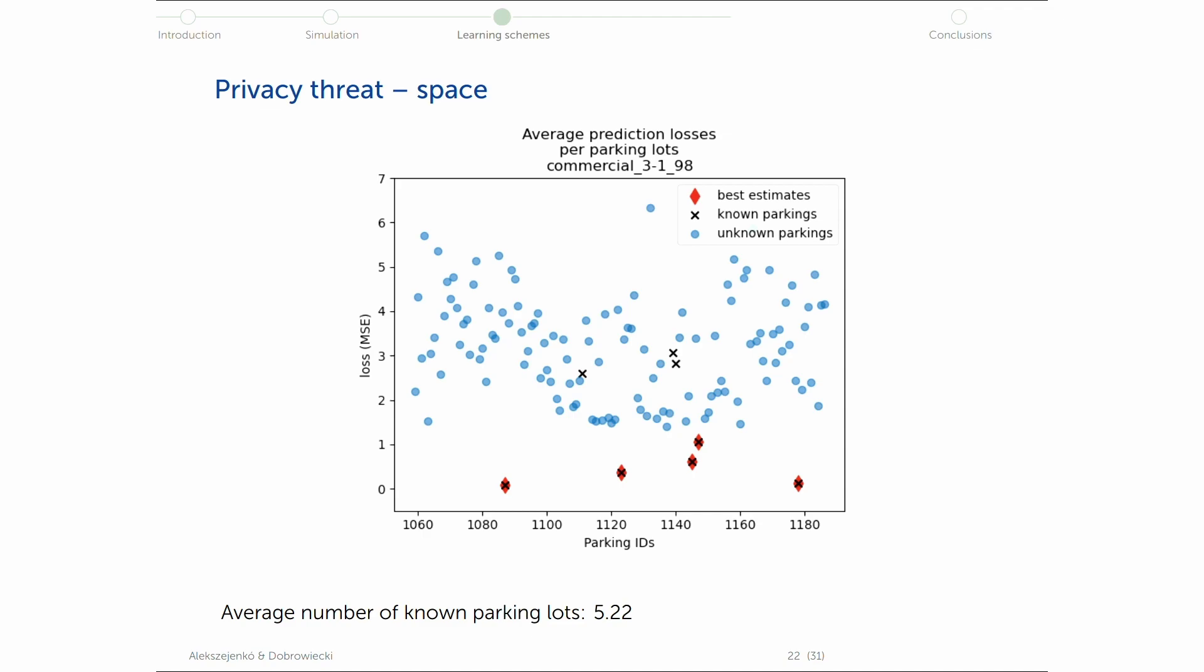And as you can see, it's a very good approximation of the known parking lots. Five out of five is correct. And yes, there are three which are not identified by this method, but let's go forward with these five parking lots and try to infer the moving time of this vehicle.